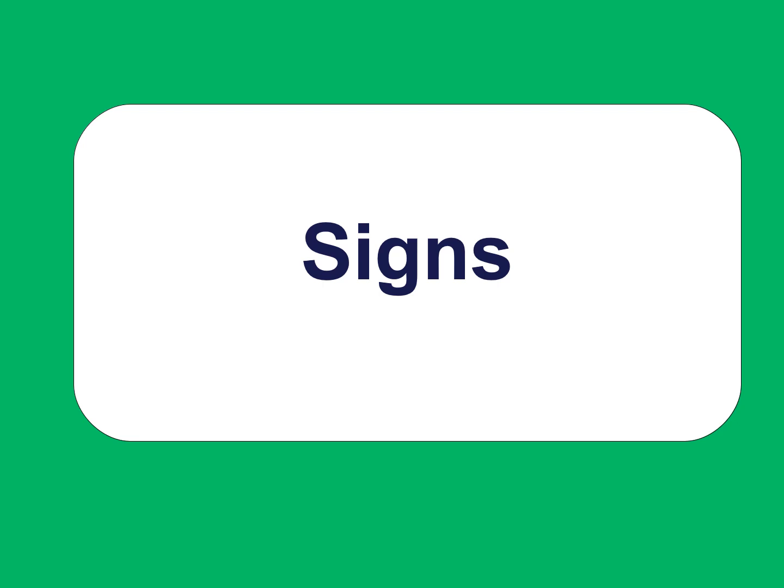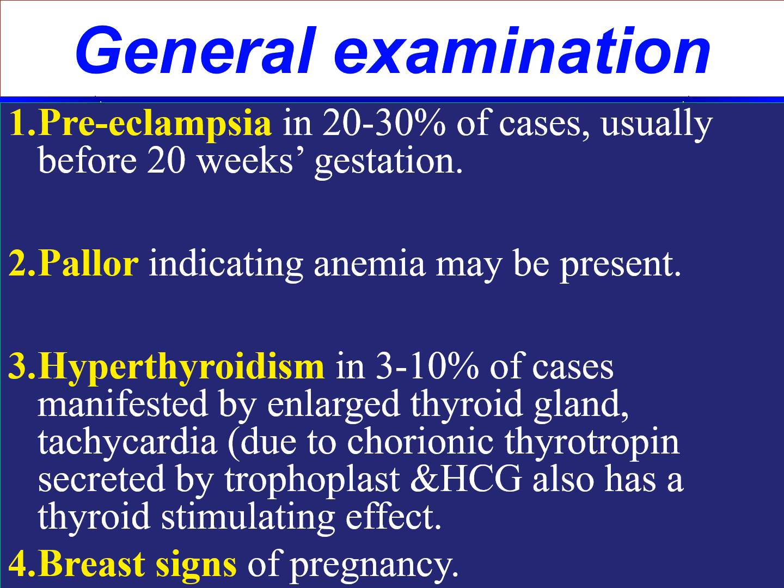Signs of vesicular mole on general examination include signs of preeclampsia — in 20–30% of cases, edema and proteinuria develop before the 20th week of gestation. The patient will have pallor indicating significant anemia. Hyperthyroidism is present in 3–10% of cases, manifested by enlarged thyroid gland and tachycardia; it occurs due to chorionic thyrotropin secreted by the trophoblast, and HCG also has a thyroid-stimulating effect. Usual breast signs such as Montgomery tubercles, breast engorgement, bluish discoloration, bluish surface veins, and prickling and tingling sensation of the breast will also be present.